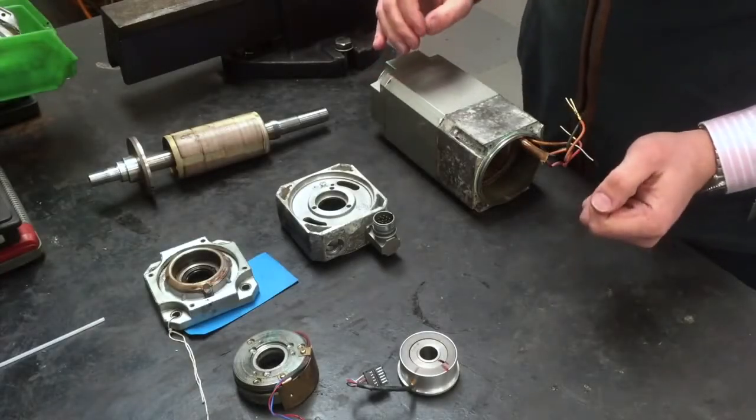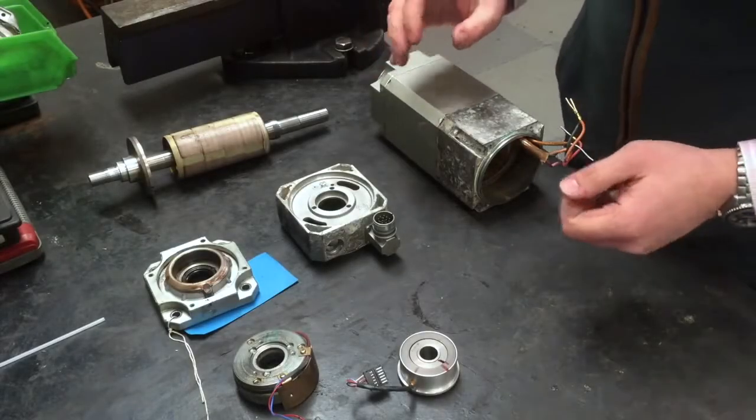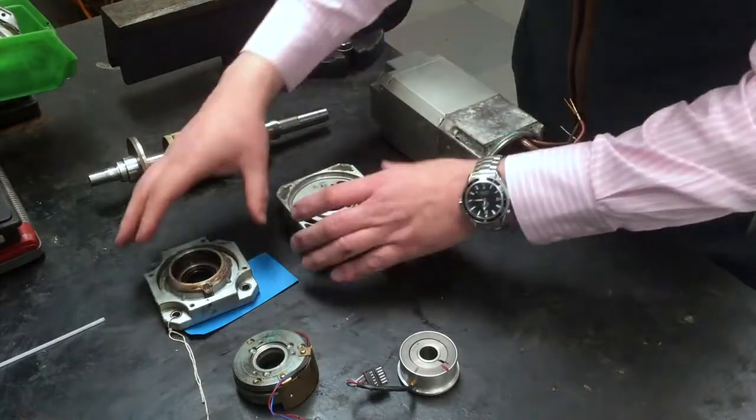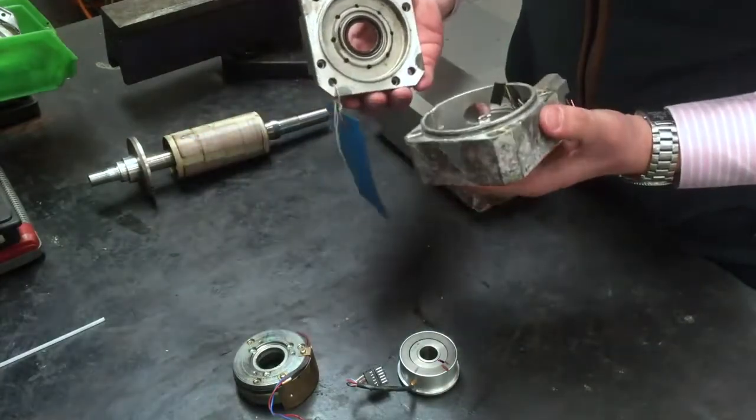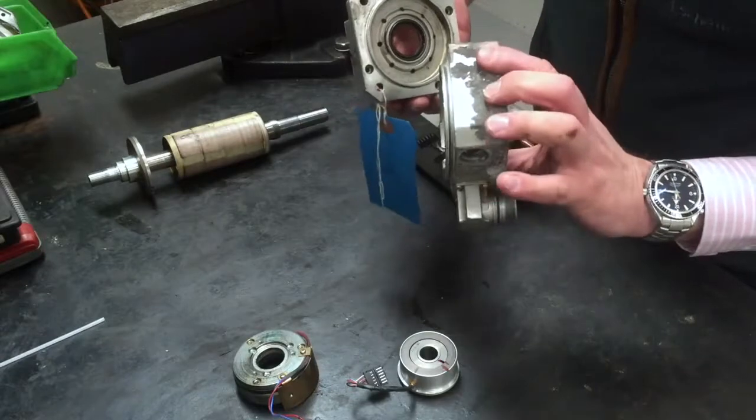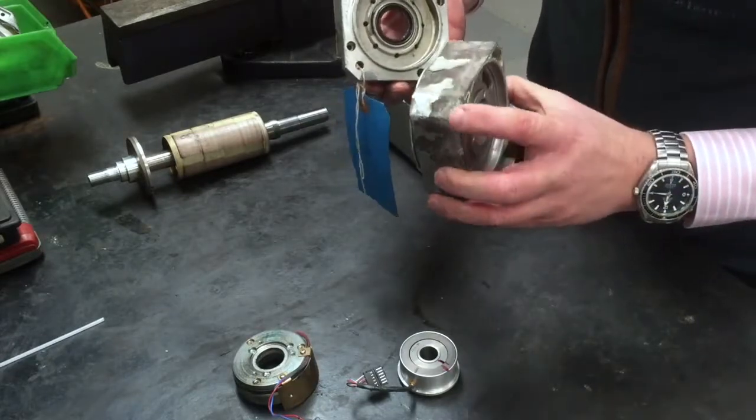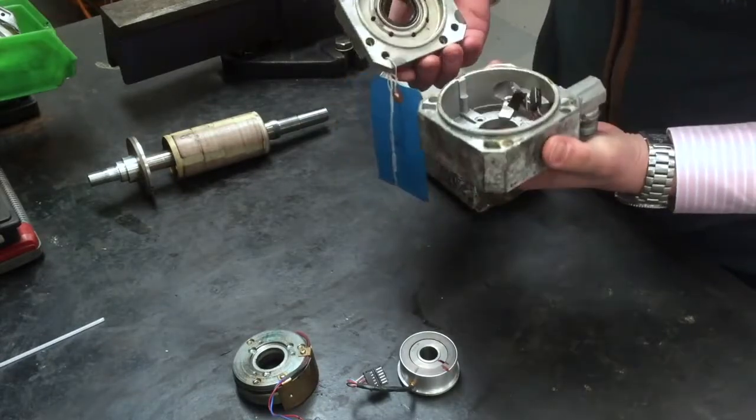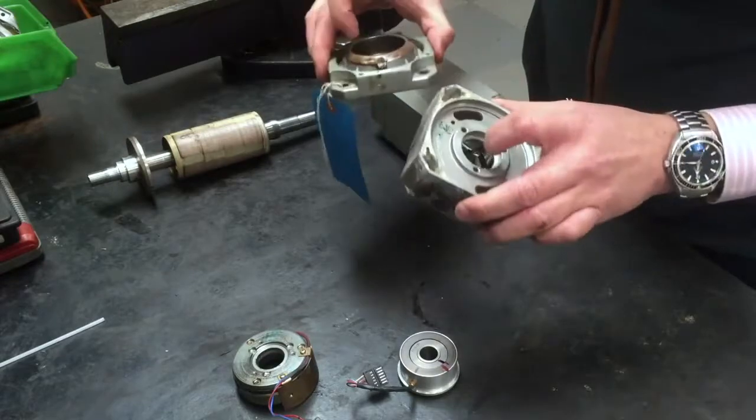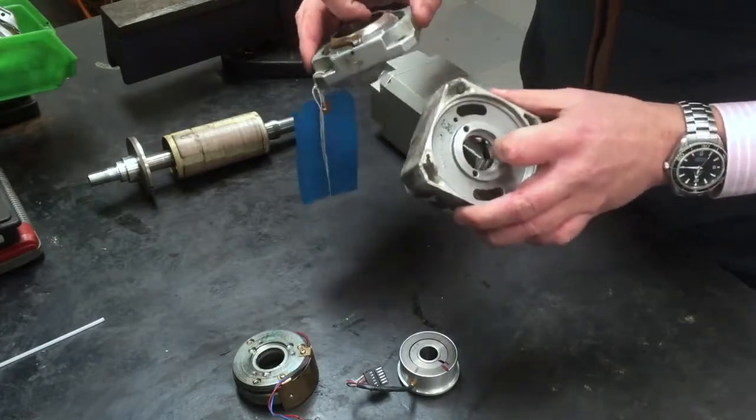As you can see, the servomotor has now been stripped down into component parts. A number of things will happen here. Firstly, we will take the end shields. You can see there are elements of corrosion on here, as if there is water or fluid that has been around the motor. We will clean these up and measure the bearing housings on our coordinate measuring machine.